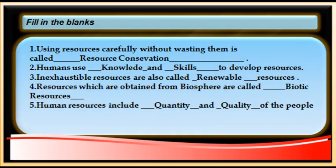The answers: number one is resource conservation — using resources carefully without wasting them. Number two: humans use their knowledge and skills to develop resources. Number three: exhaustible resources are also called non-renewable resources. Number four: resources obtained from the biosphere are called biotic resources. Number five: human resources include the quantity and quality of human beings.